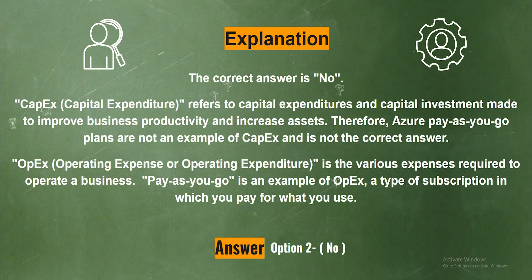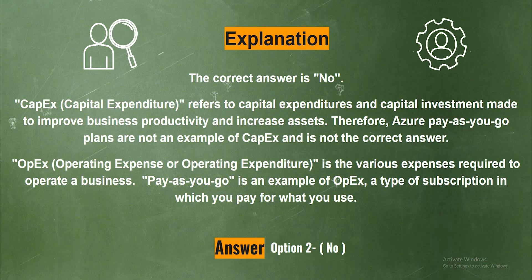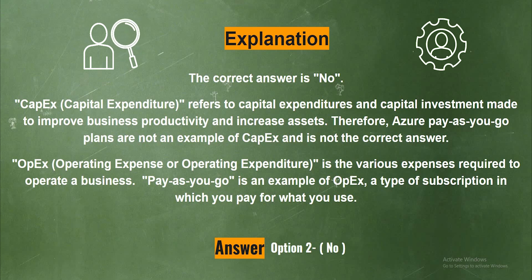CapEx refers to capital expenditures and capital investment made to improve businesses' productivity and increase assets. Therefore, Azure pay-as-you-go plans are not an example of CapEx. OpEx is the various expenses required to operate a business. Pay-as-you-go is an example of OpEx — a type of subscription in which you pay for what you use.